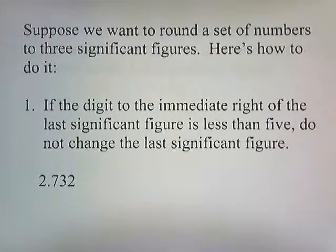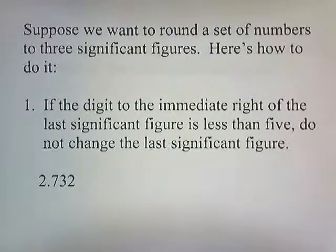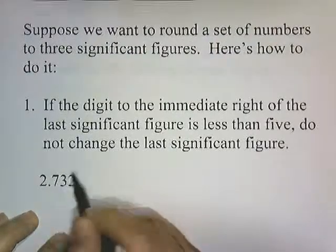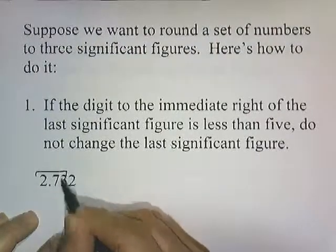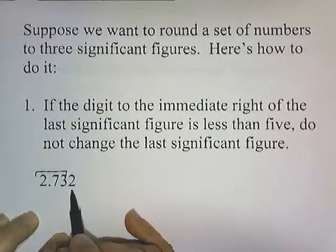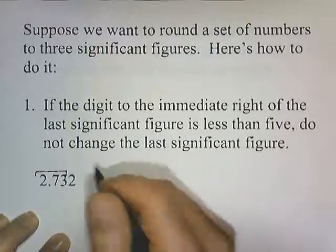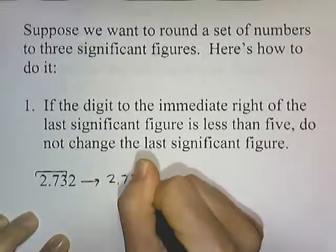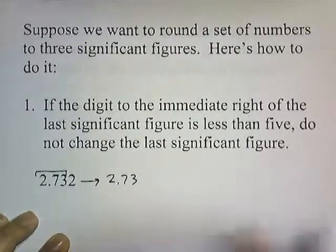Suppose we want to round a set of numbers to three significant figures. If the digit to the immediate right of the last significant figure is less than 5, do not change the last significant figure. So we want to round to three significant digits — here's the third digit. We look past it; it's the number 2. Since 2 is less than 5, we round this to 2.73. If it's less than 5, we just leave that digit alone.